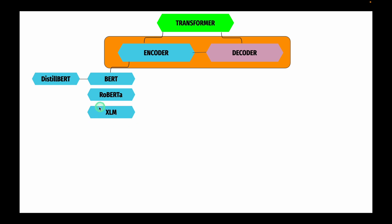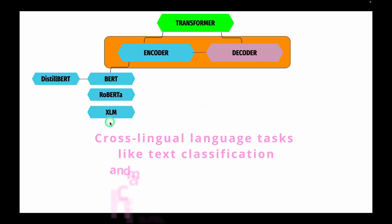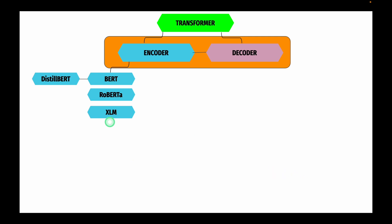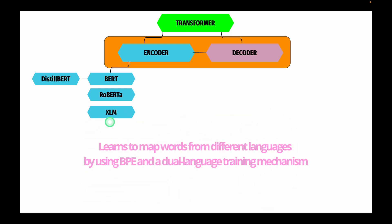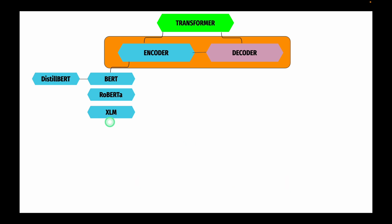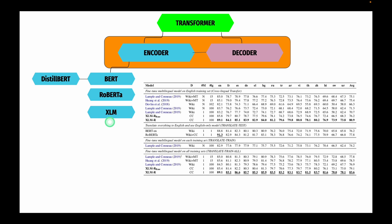The next encoder-only architecture is XLM, an improved version of BERT capable of performing cross-lingual language tasks like text classification and machine translation. XLM learns to map words from different languages using byte-pair encoding or BPE and a dual-language training mechanism. XLM introduces an additional training objective called Translation Language Modeling or TLM, which can be viewed as an extension of MLM. XLM achieved state-of-the-art results on multilingual NLU benchmarks as well as translation tasks.